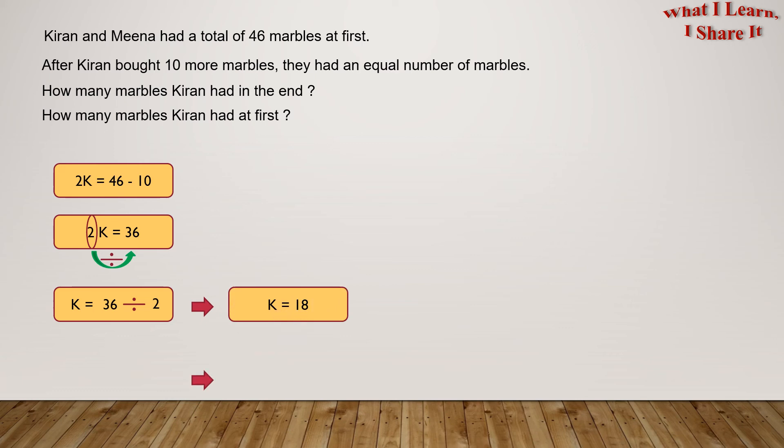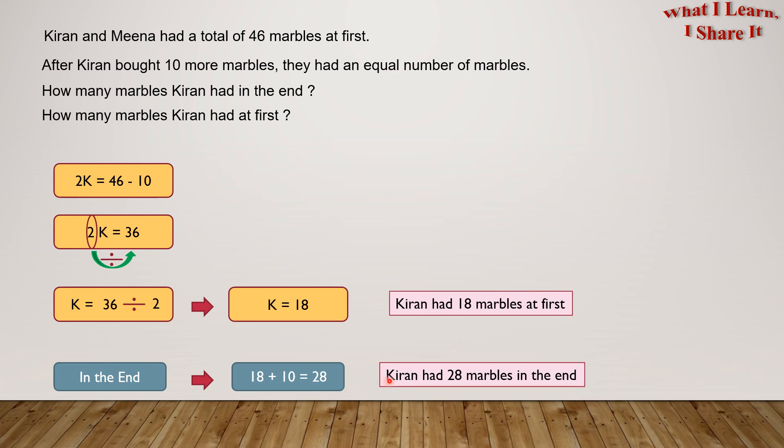But remember, K was the number of marbles Karen had at first. So, Karen had 18 marbles at first. And remember, later Karen bought 10 more marbles. So, Karen had 18 plus 10 equals 28 marbles in the end. So Karen had 28 marbles in the end.